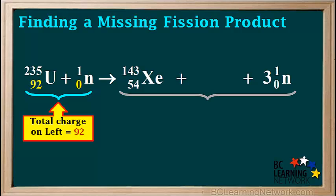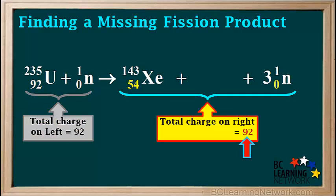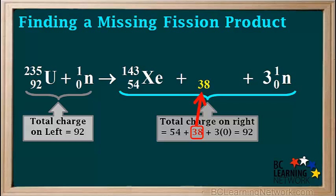We'll start by using conservation of charge. The total charge on the left side is 92 plus 0, which equals 92. So the total charge on the right side must also be equal to 92. The charge on the xenon is 54, and the charge on 3 neutrons is 3 times 0, which is 0. So the charge on the missing particle must be 92 minus 54, which is equal to 38. So we write 38 here on the bottom left of the symbol for the other element. Looking on the periodic table, we see that element number 38 is strontium, so we write its symbol SR here.